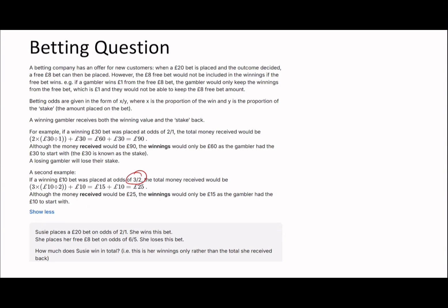To summarize: if you win, you will get your stake plus your winnings, which is calculated as stake times odds. In this example here it would have been the £10 times 3/2, and then your stake is your original £10. If you lose, you lose your stake. If I put £10 in, I lose £10. Although the money would be £25, the winnings would only be £15, so the gambler had £10 to start with.